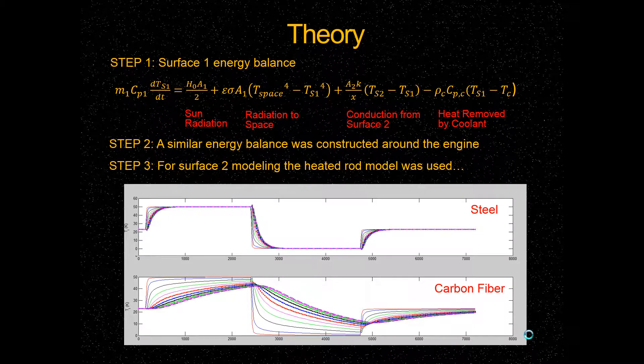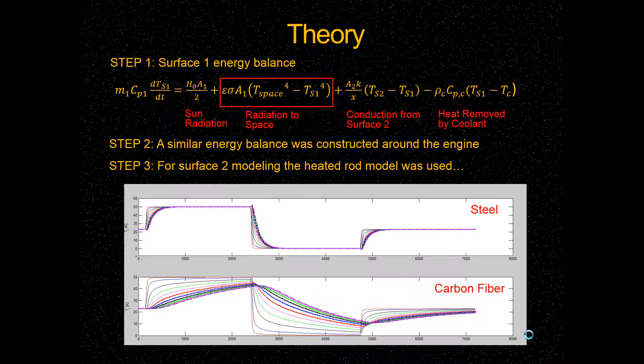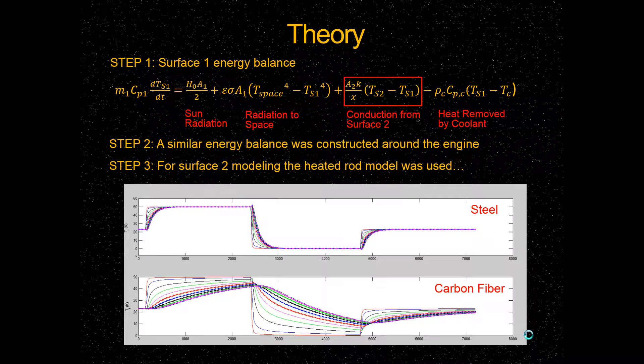The next term that we used is a radiation term to take into account the radiation that was leaving our spaceship and going into space, into the cold depths of space. This next term accounts for conduction between the two surfaces inside the ship, which are at different temperatures. Surface one takes into account radiation from space, and surface two takes into account heat that it gets from the engine.